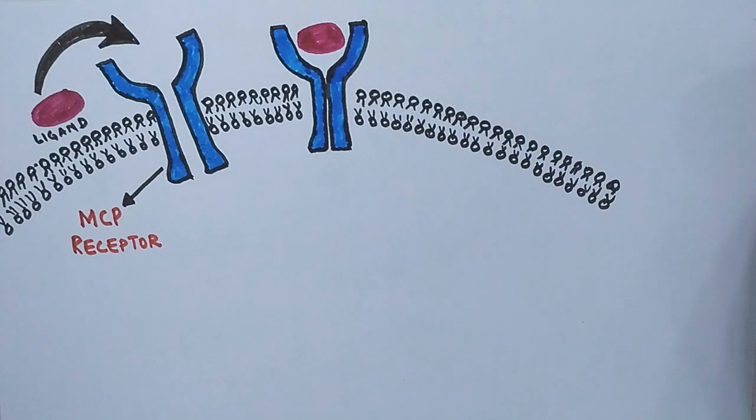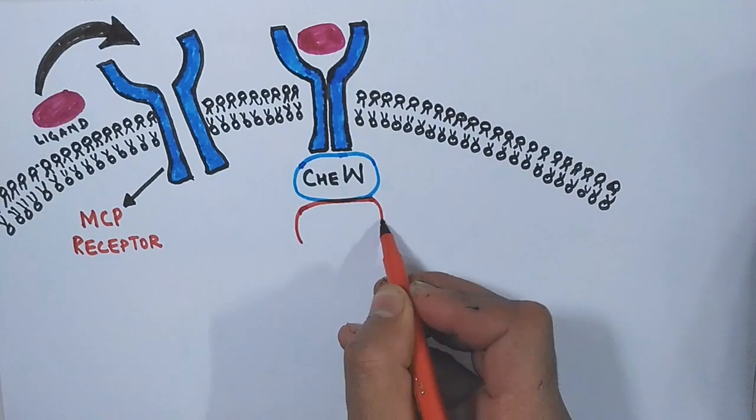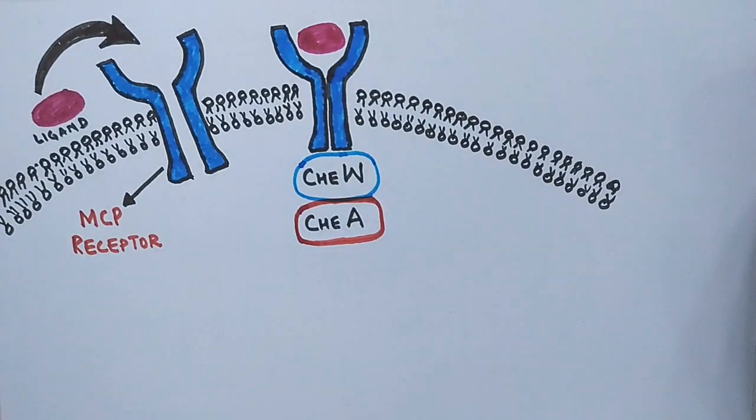After dimerization of MCP, the MCP recruits two more proteins: one is called CheW or you can say CW protein, another one is CheA protein or you can say CA protein.